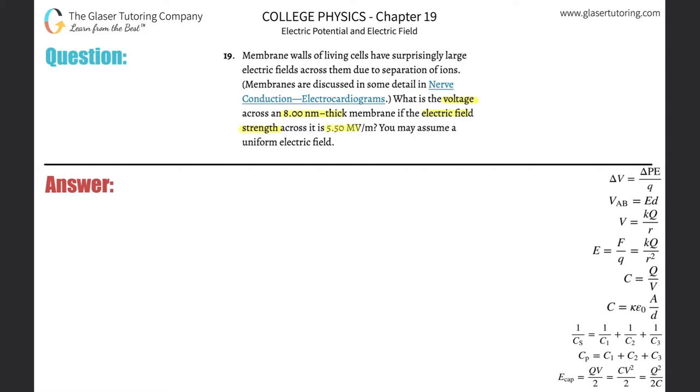5.5 megavolts per meter? You may assume a uniform electric field. So number 18, I went through a discussion and picture, so check that out. I'm just going to go through the calculation here.